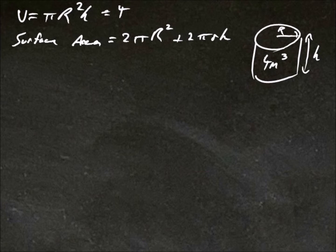For our volume formula, if we rearrange for h, we'd get h equals 4 over pi r squared.